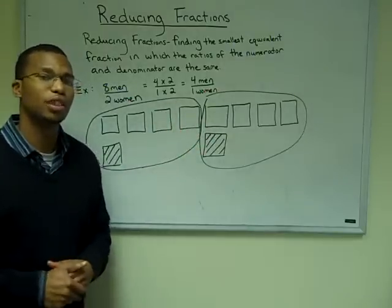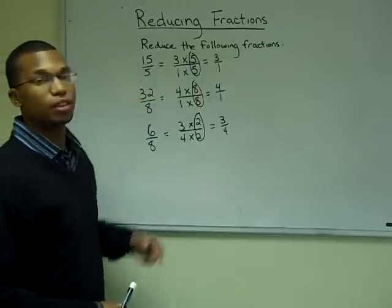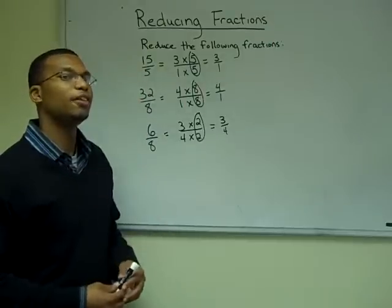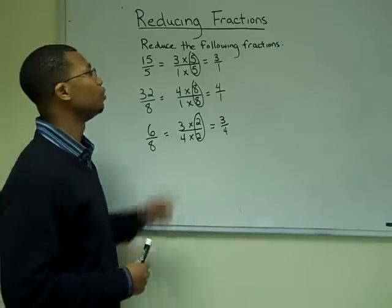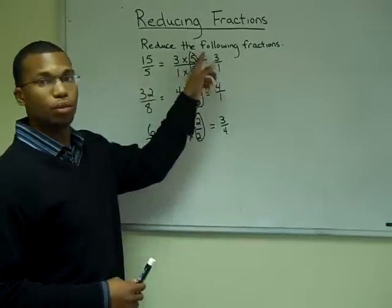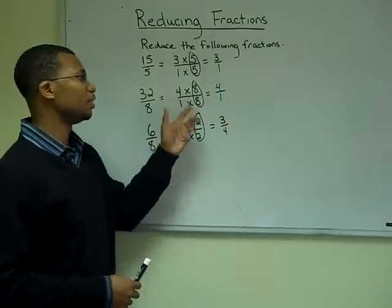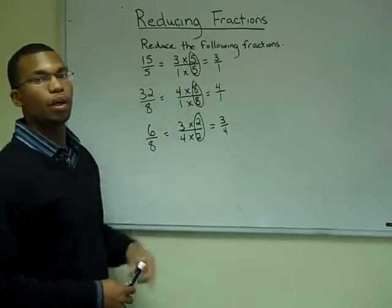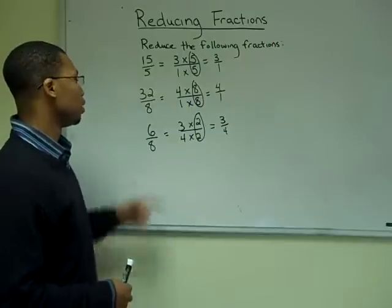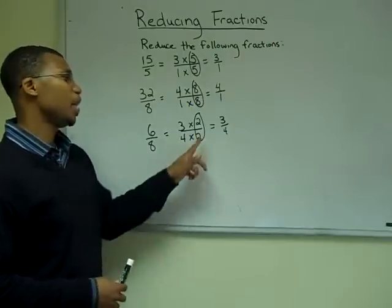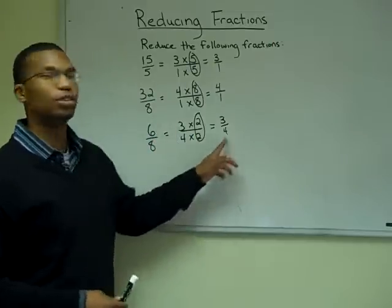Let's look at some examples of this. Say we are to reduce the following fractions. Fifteen fifths is the same thing as five sets of three to one, so we can reduce fifteen fifths to three to one. Thirty-two eighths is the same as saying we have eight sets of four to one, so we can reduce thirty-two eighths to four to one. Six eighths is the same as saying we have two sets of three to four, so six eighths reduces to three to four.